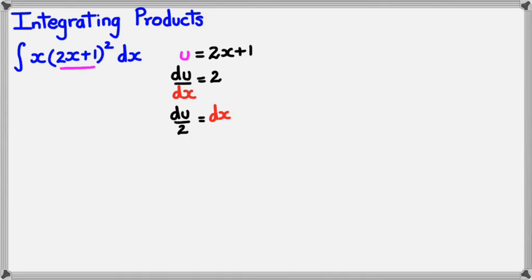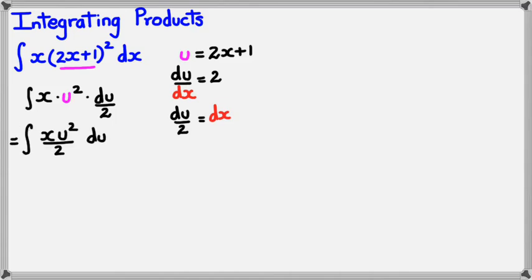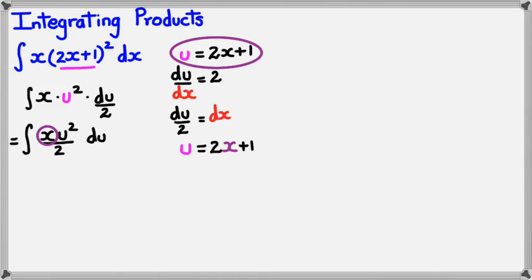Now I'm going to replace everything in the integral itself. So I've got integral of x multiplied by u squared, and dx is equal to du divided by 2. Unfortunately I can't integrate this because there is still an x I've got to deal with. We've got integral of x·u² divided by 2 du. I've still got to get rid of this x, and the way I can do that is by using the equation u equals 2x + 1.